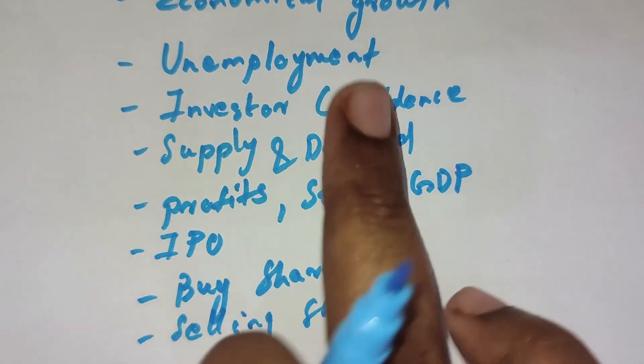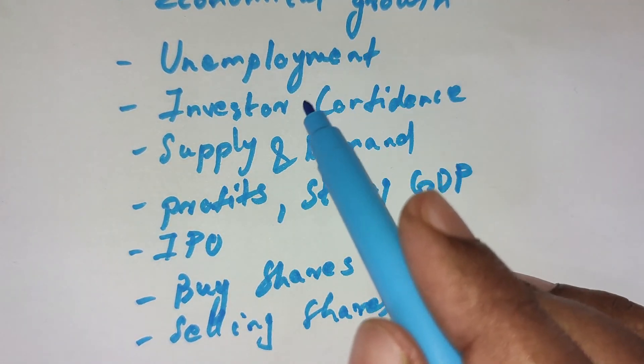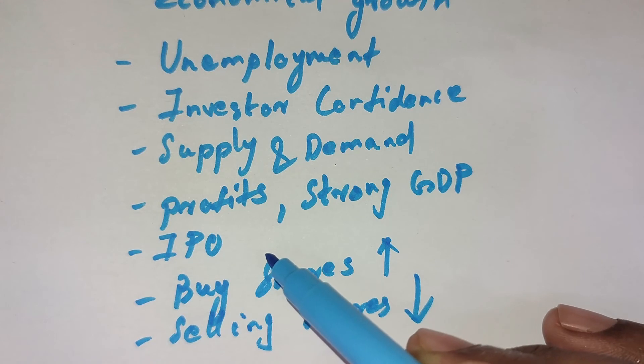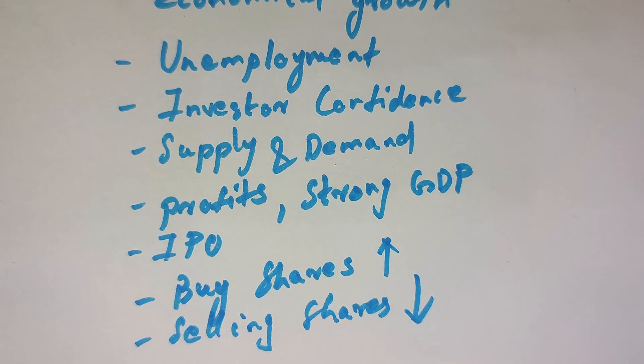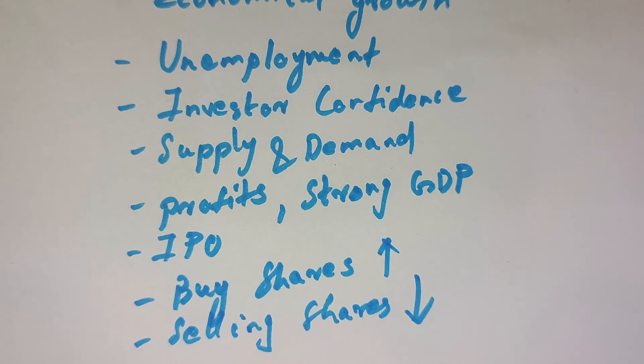So due to this investor confidence being increased due to the economical growth, unemployment, IPOs being more in number, thereby seeing many profits and strong GDP values - all these things combinedly they just result in buying of more shares from the investor end. So buying of more shares in the investor end, the overall demand starts to go high, making the stock or share price higher and higher day by day. So that is how the consistent growth we are talking about here.